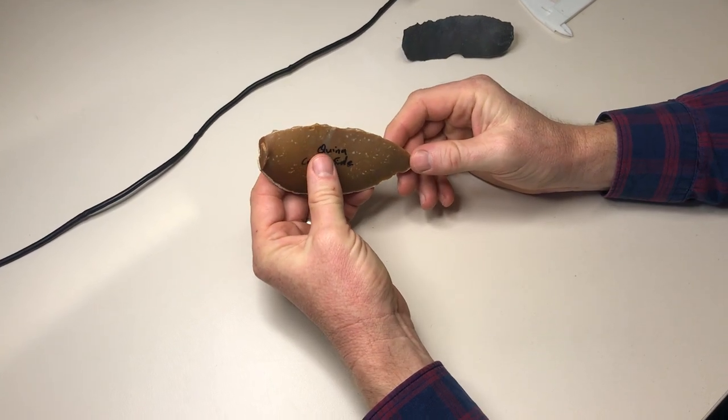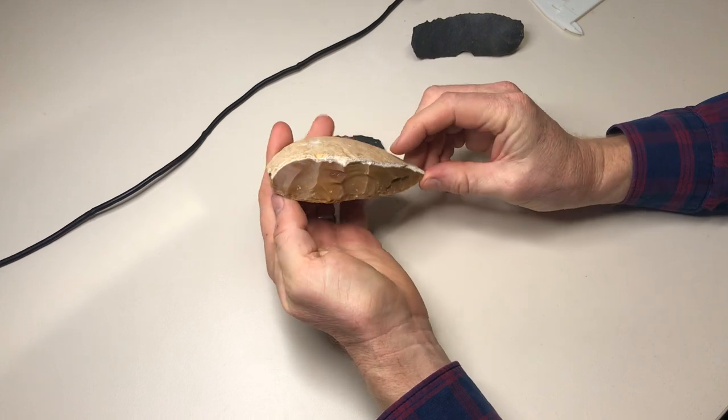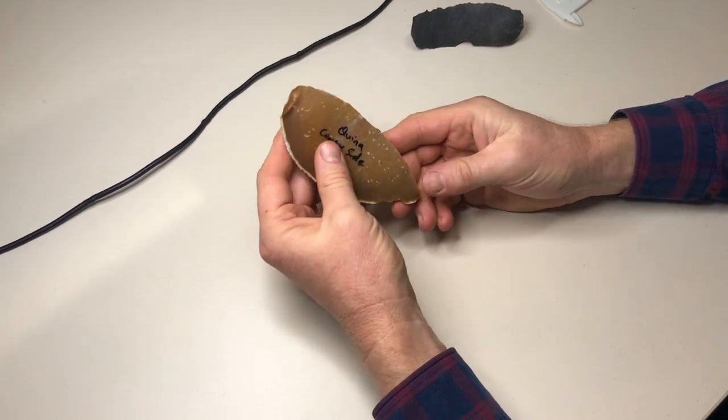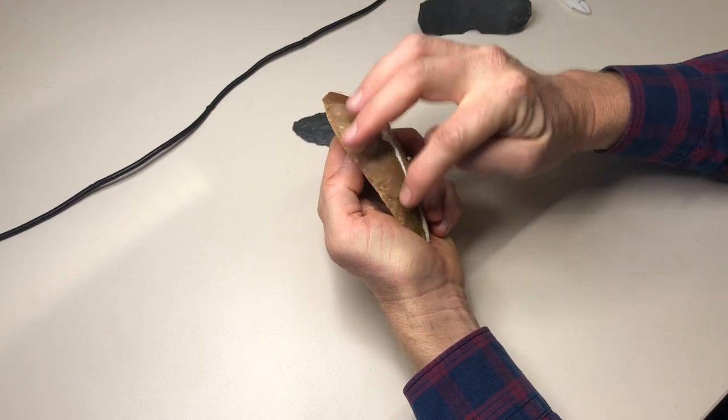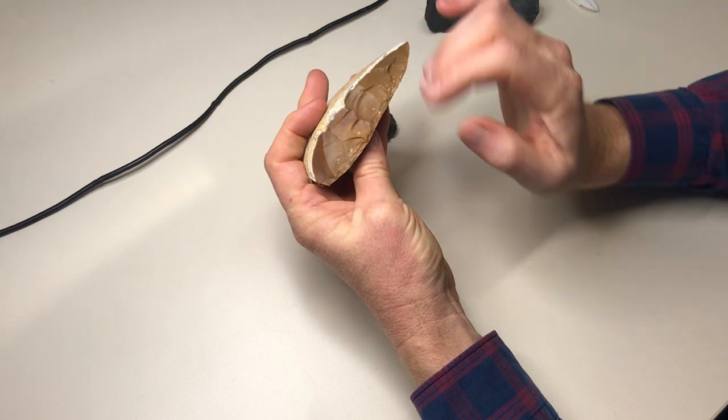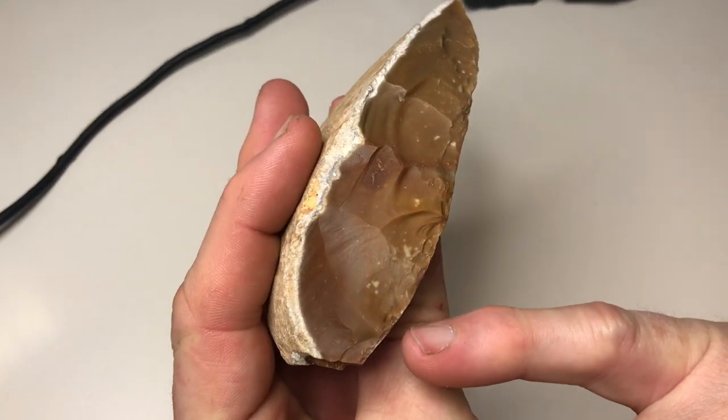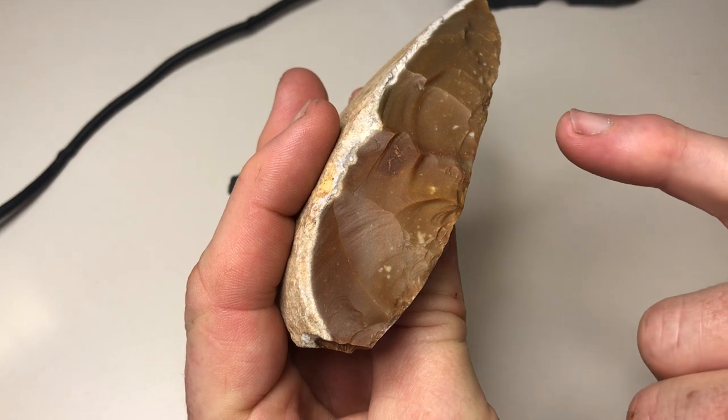The first thing that we've got in our spreadsheet is whether or not we have unifacial or bifacial retouch. Unifacial retouch is where we have retouch just going on to one side, like we do here onto the dorsal, so coming from the ventral. We can see that it's retouched because we've got all the little initiations along the edge which come from the ventral and the flake scars go onto the dorsal.